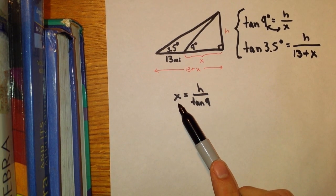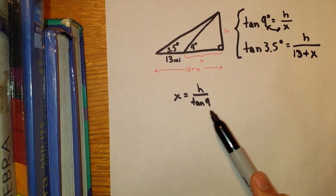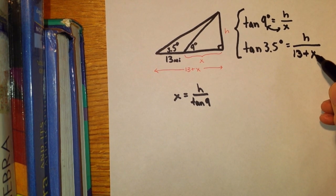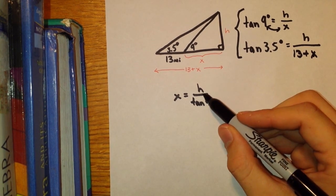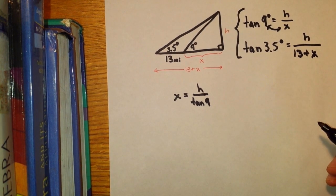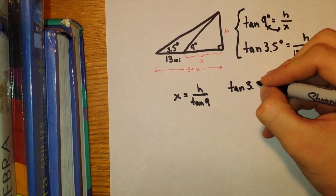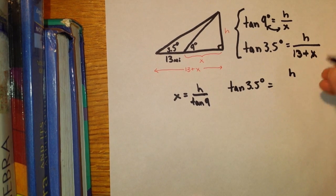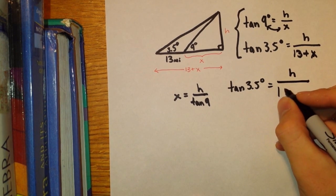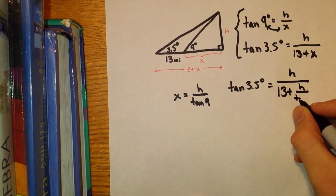Once I have X isolated, once we know that X is equal to H over tangent of 9, we are able to replace, substitute this X in the second equation with this H over tangent of 9. So we know that tangent of 3.5 degrees, using substitution, is equal to H divided by 13 plus H over tangent of 9.